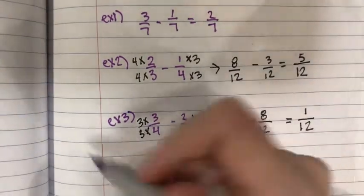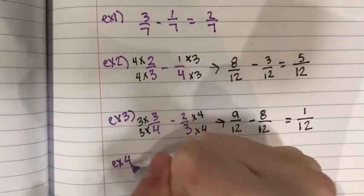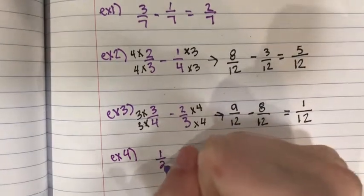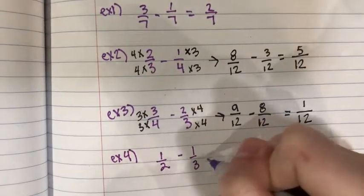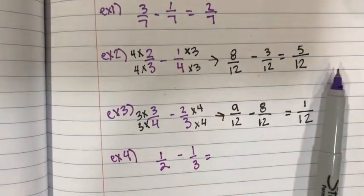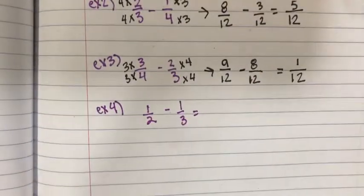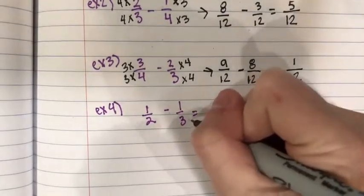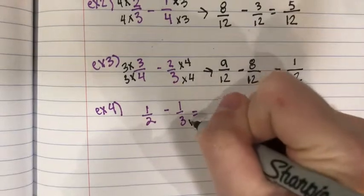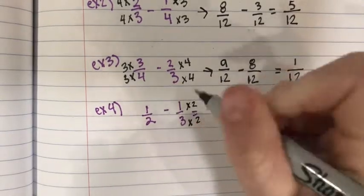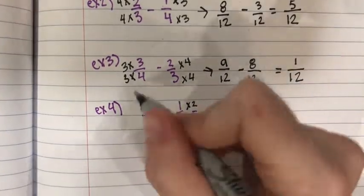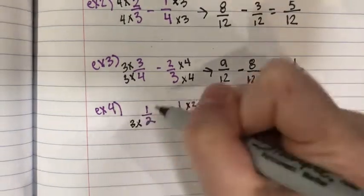Now the last example that we are going to do is 1 half minus 1 third. So again multiply this denominator by the top and bottom of this fraction and then do the same thing to the other fraction.